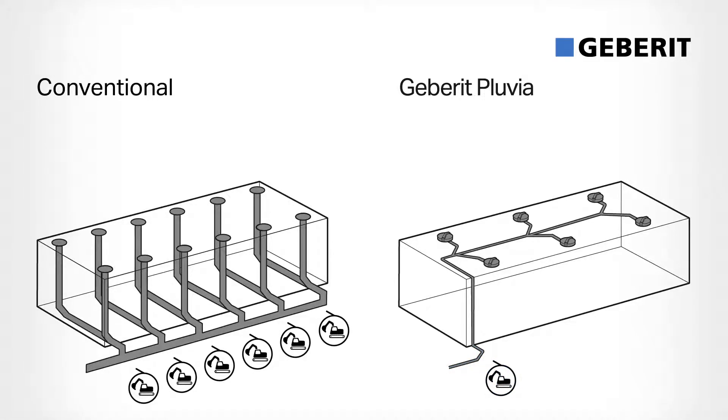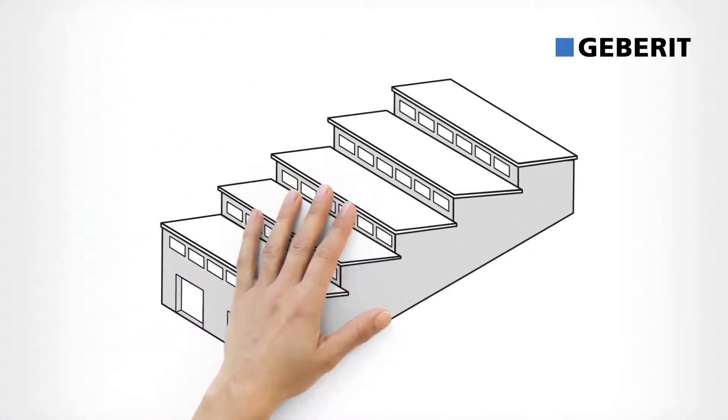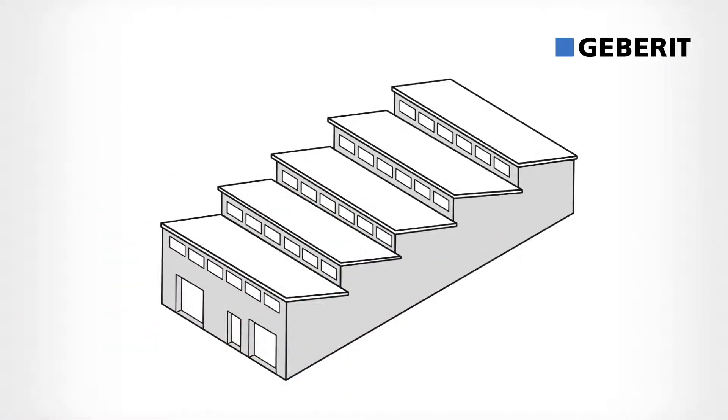This offers flexibility for architectural designs, conserves material, and cuts down on work. The Geberit Pluvia system is suitable for almost any roof shape and offers clear advantages.